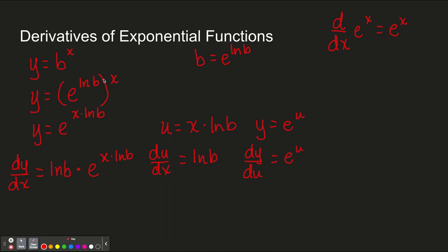Well, we'll remember way back from when we started here. e to the natural log of b times x was just b to the x. So we can go back kind of to the beginning here and just say that this guy here is equal to b to the x.